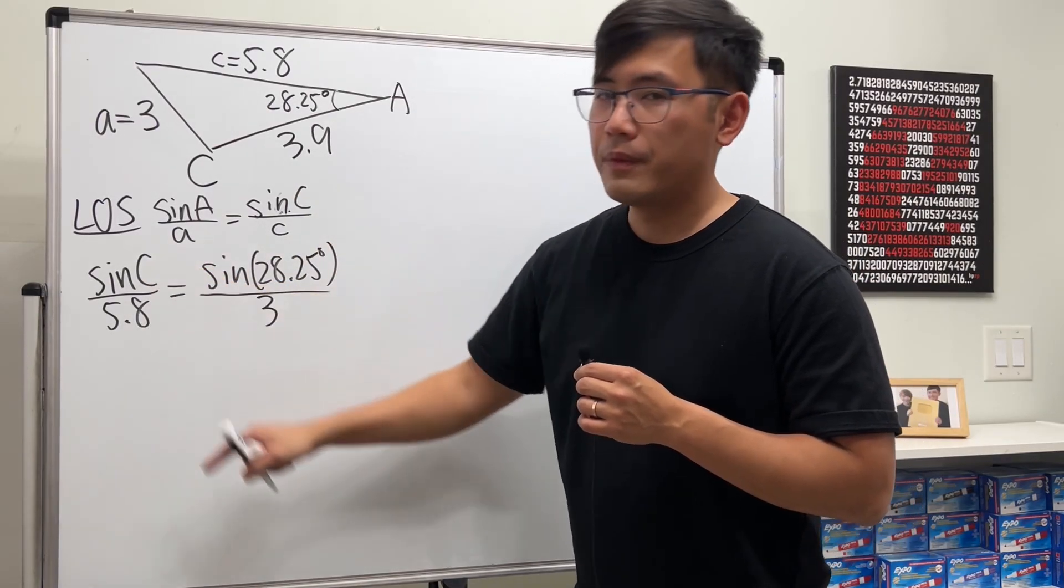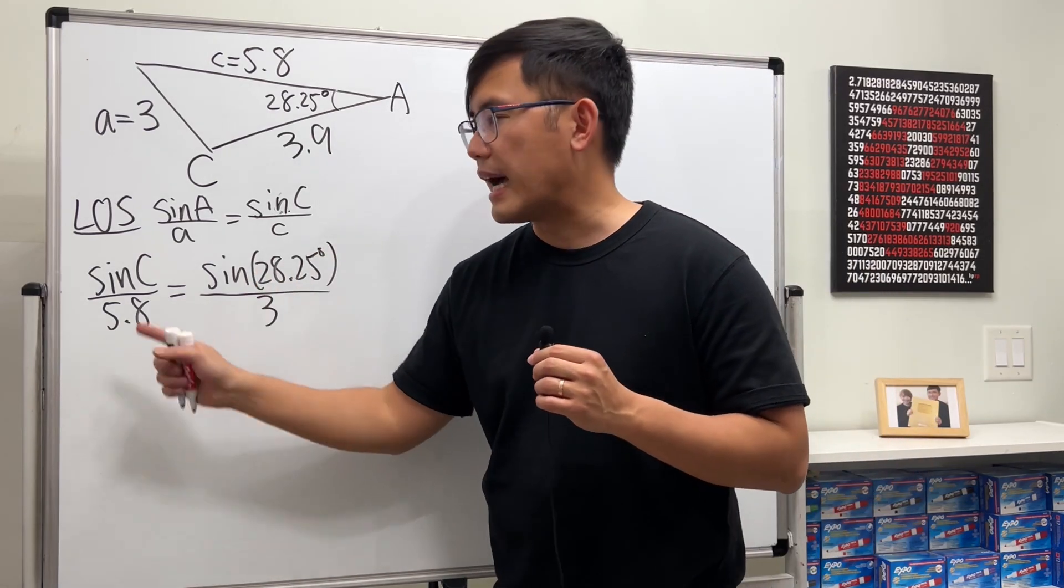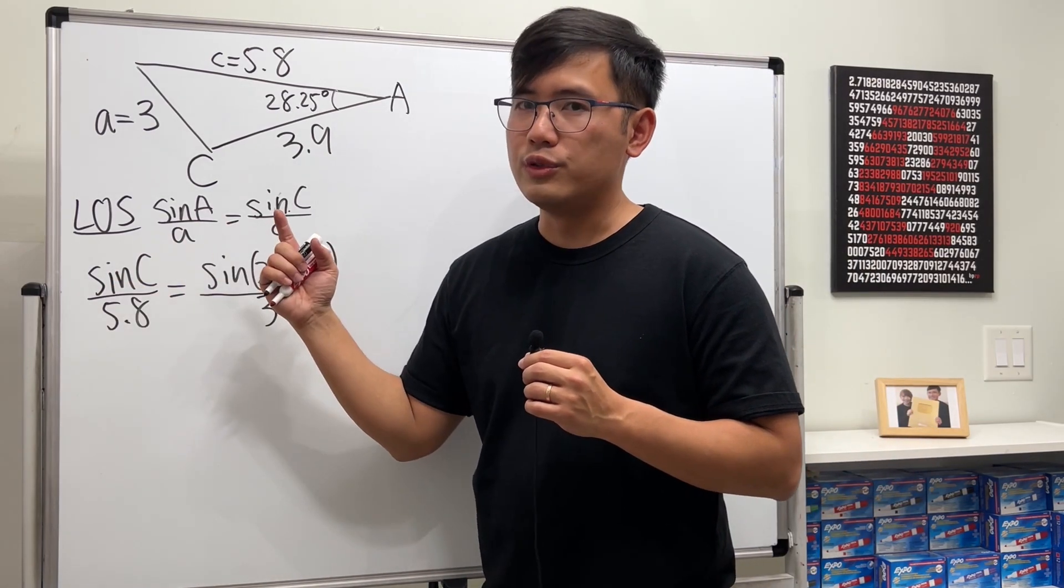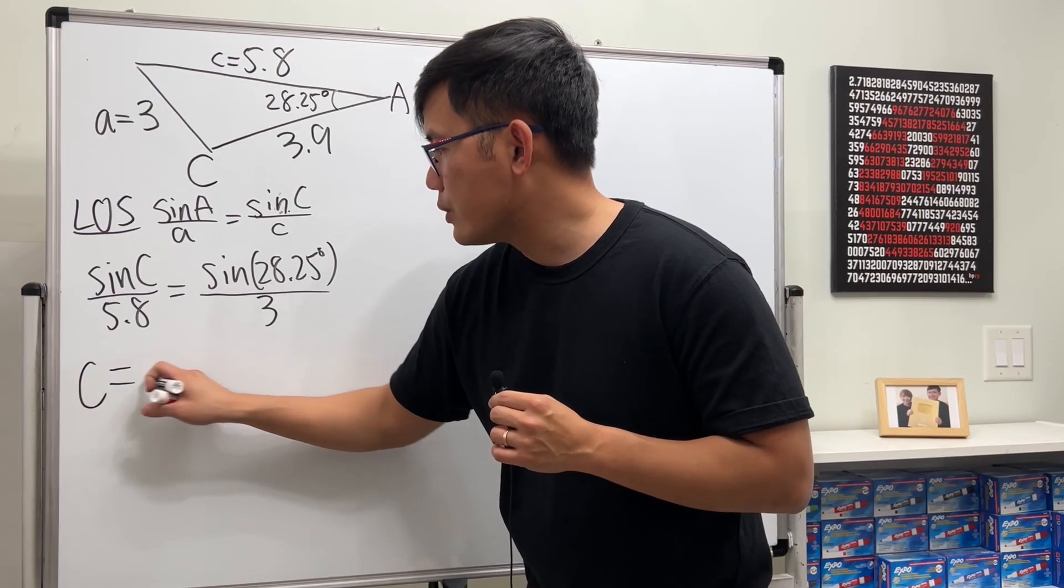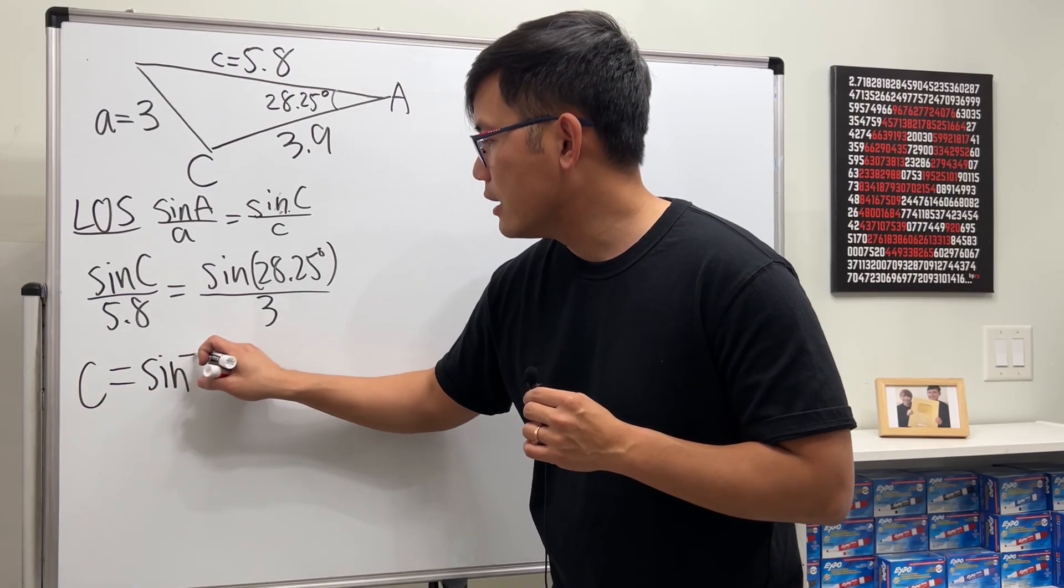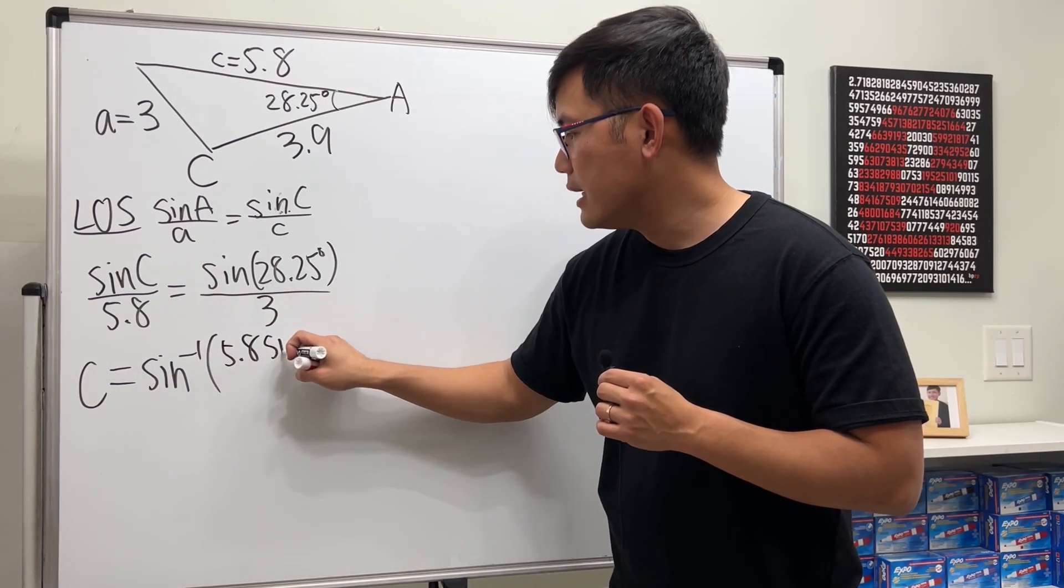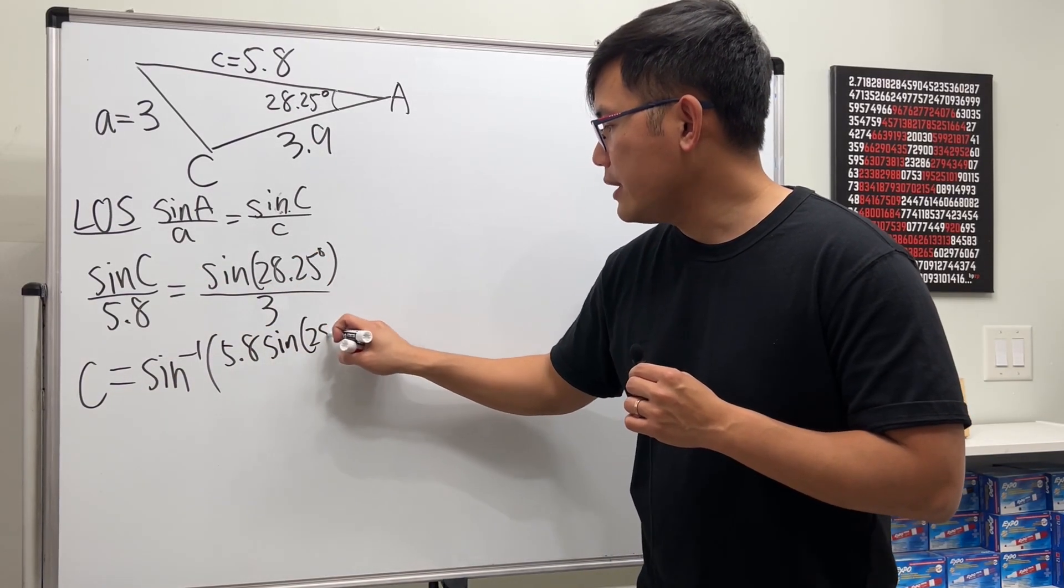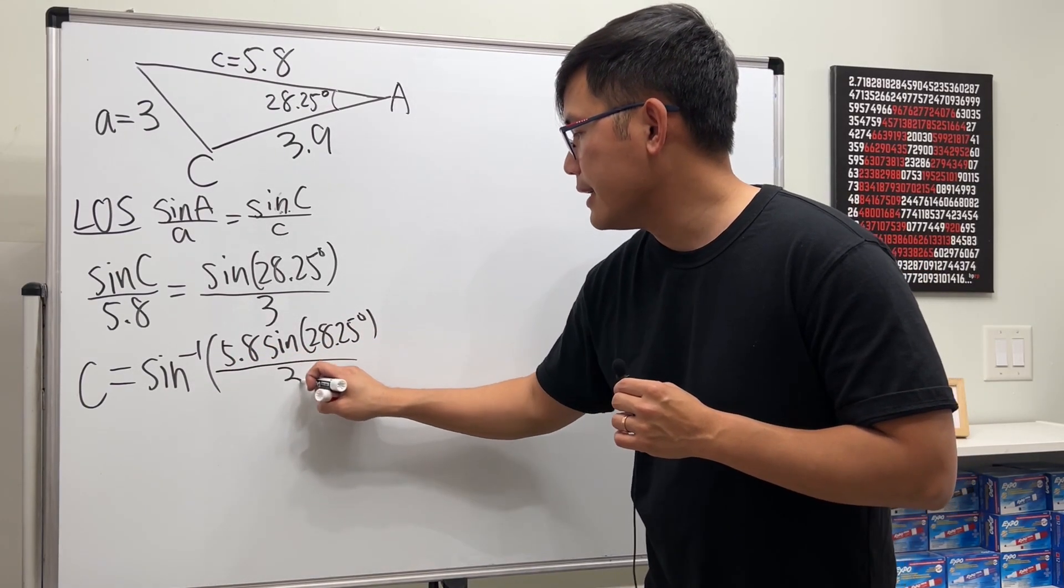And to solve for C, first we multiply the 5.8 on both sides. And then take the inverse sine so that we can get rid of the original sine. This tells us that angle C is equal to inverse sine of 5.8 times sine of 28.25 degrees, and then all divided by 3.